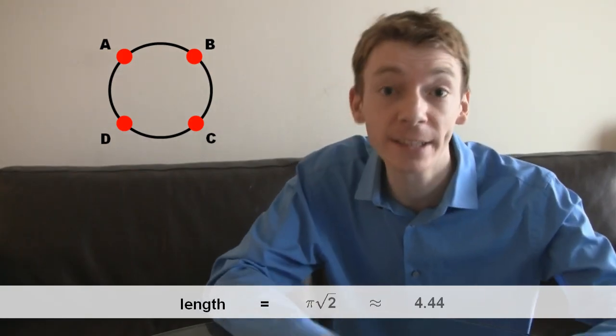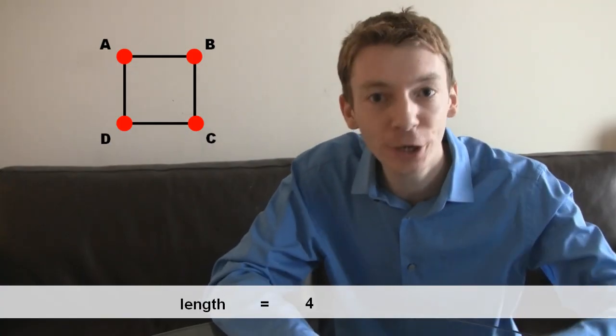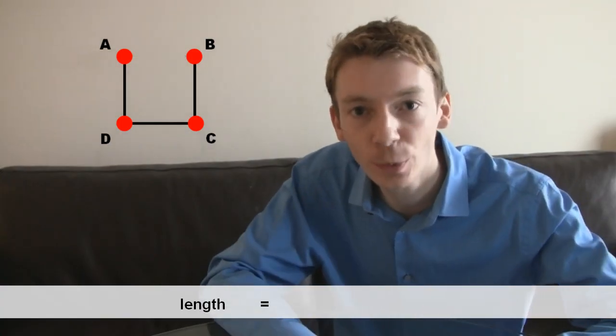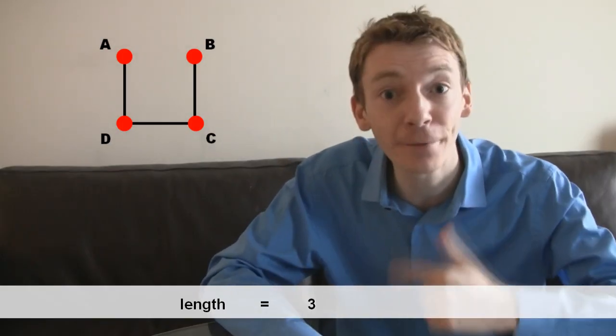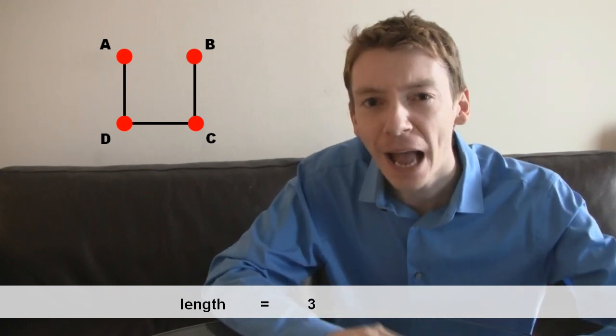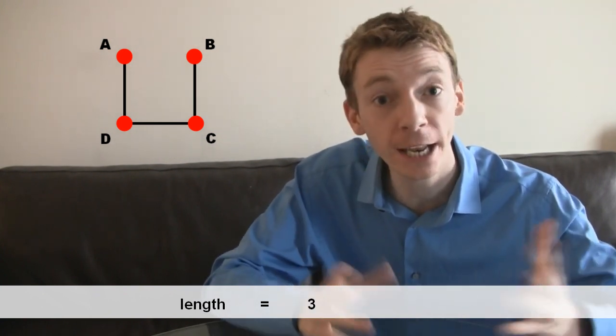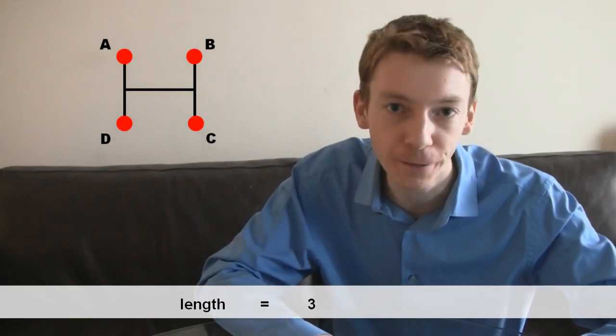We could connect the towns together in a big square. That has length 4. Even better than that, we could connect them in that sort of U shape, which has length 3. But it's not a very efficient way, especially to get from A to B. It's not a very efficient way to get around. Perhaps a slightly better answer would be to connect them into an H, which would still have length 3, but perhaps slightly more efficient.